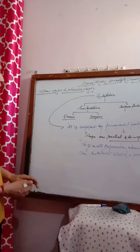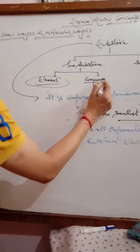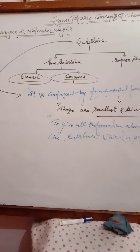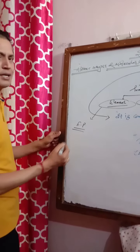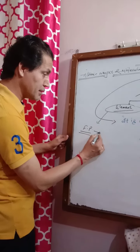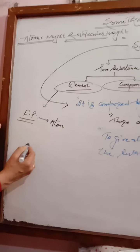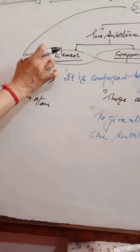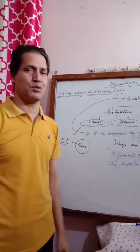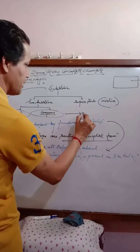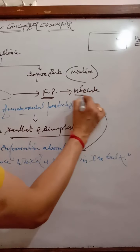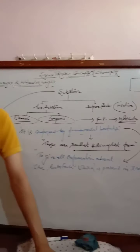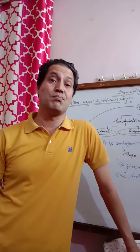Now, the fundamental particle of an element is called an atom. And the fundamental particle of a compound is called a molecule. So, the fundamental particle of an element is atom, and the fundamental particle of a compound is molecule.